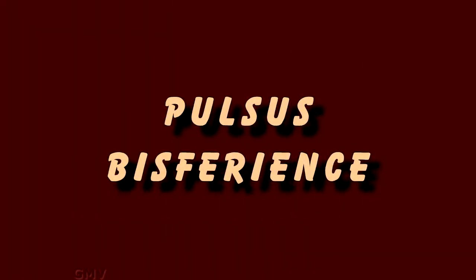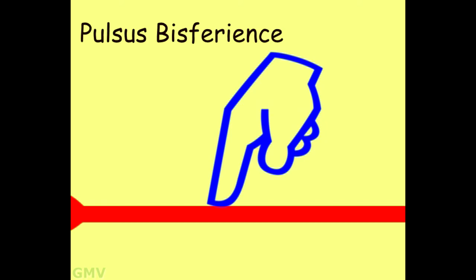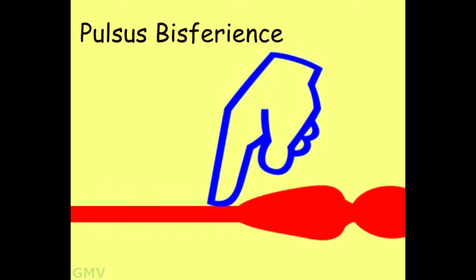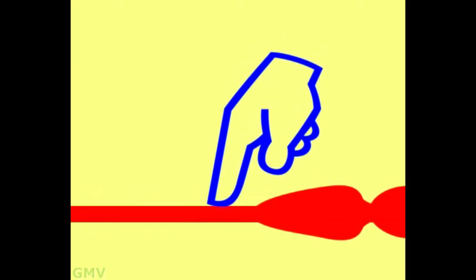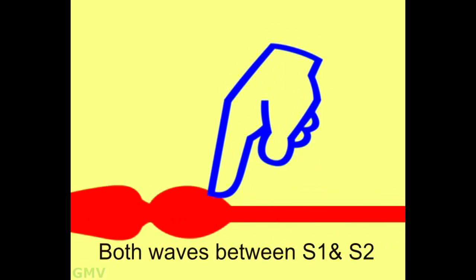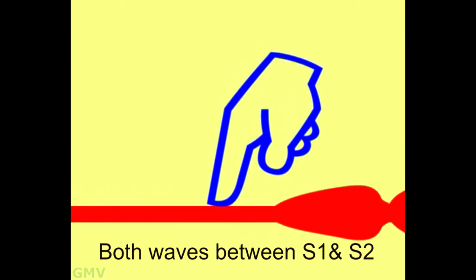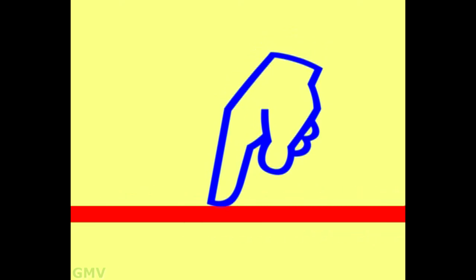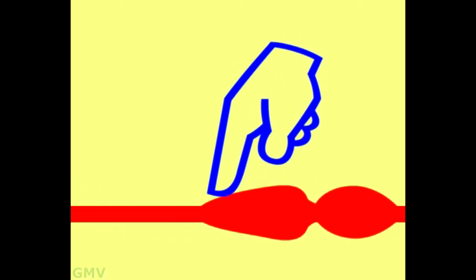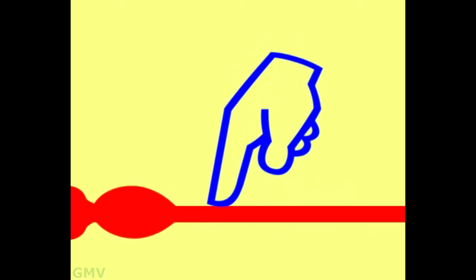Pulsus bisferiens. Pulsus bisferiens has two peaks, both in systole, percussion wave and tidal wave due to ejection of rapid jet of blood through narrow aortic valve. Percussion wave is more prominent in HOCM, while the tidal wave is equal or more prominent in AS plus AR.